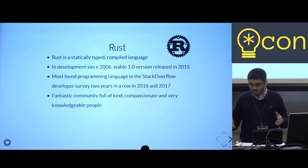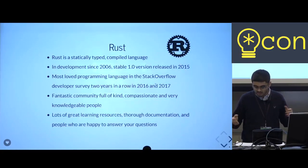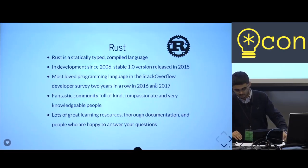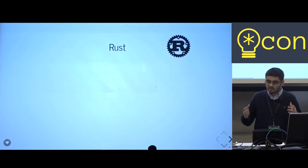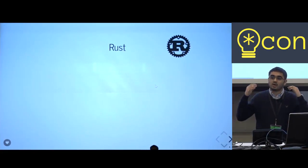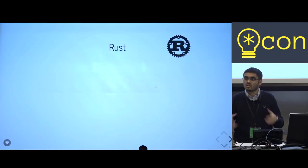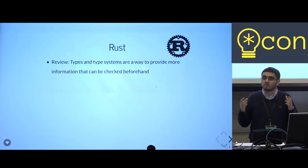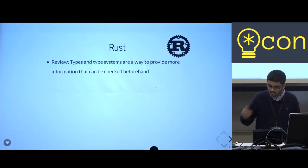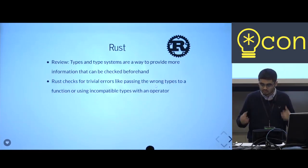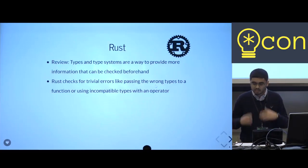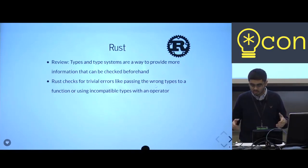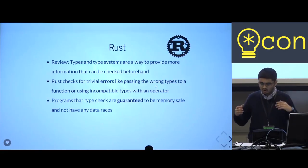Rust's community is full of kind, compassionate, and very knowledgeable people, which has made it so that there are tons of resources for learning Rust and plenty of people to help each other learn every day. Type systems provide a way to give a program more information about your code so it can be checked automatically, meaning you can be sure about more things before your program even has a chance to run. Rust can check that when you call a function or use an operator, you pass it the right types of values. Python and other languages like it do these kinds of checks too — they just can't do them until the program is already running. Rust can also check more advanced things.